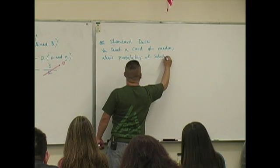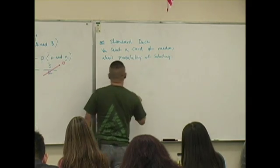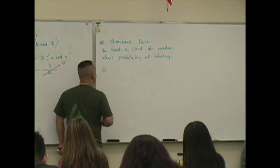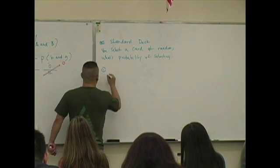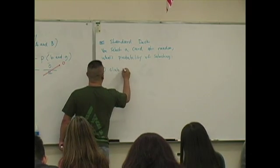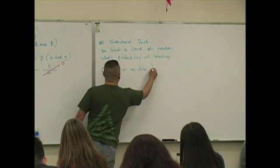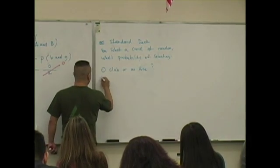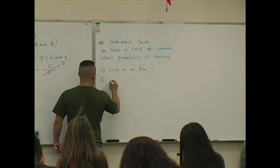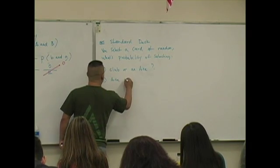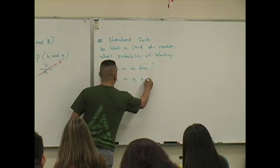What's the probability of selecting, first question: a club or an ace? Second question: an ace or a king?